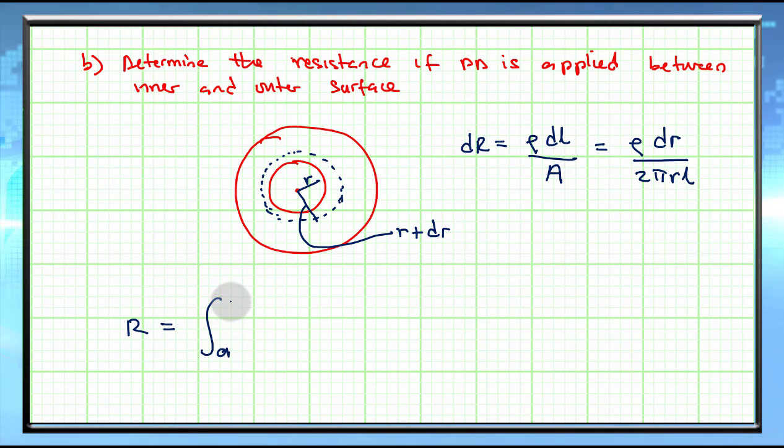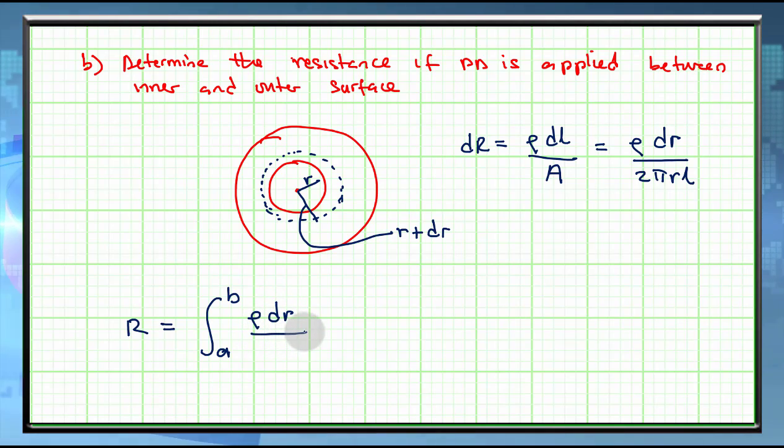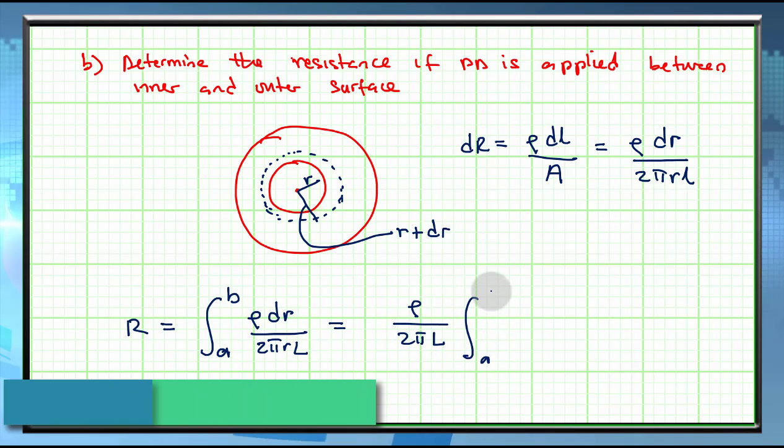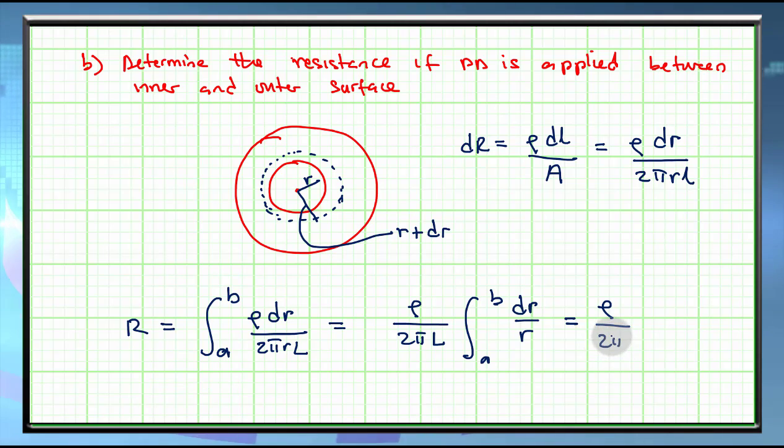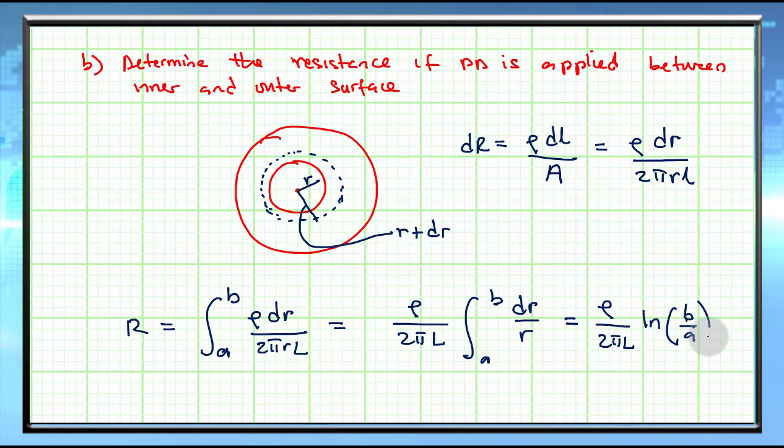the integral from A to B of ρ dR divided by 2πRL, which is going to be equal to ρ over 2πL times the integral from A to B of dR over R, which will be given by ρ over 2πL times the natural log of B over A.